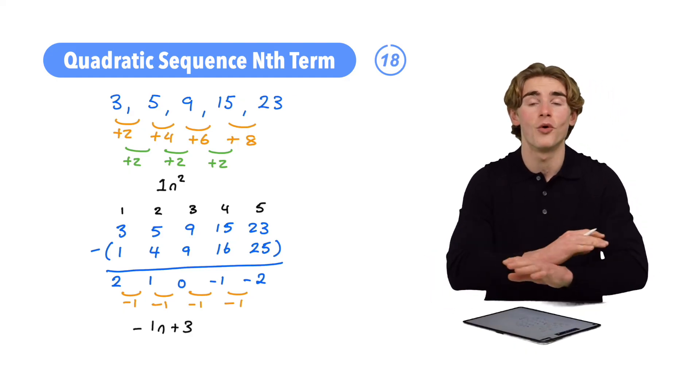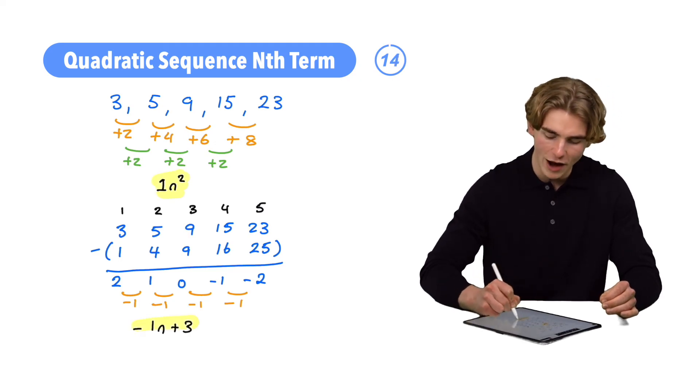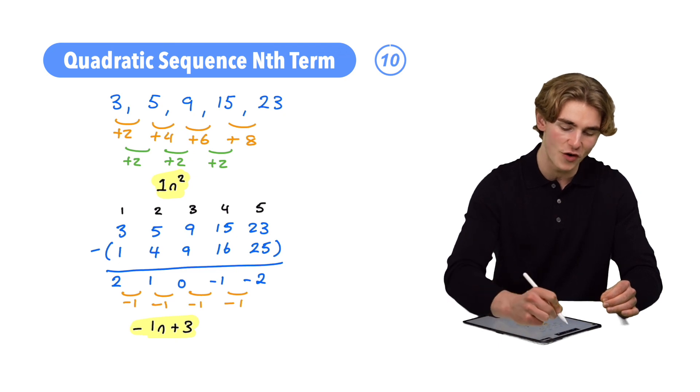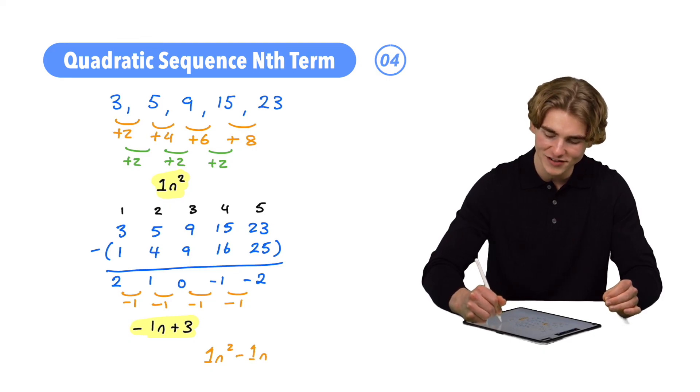So that is going to give us the last part of our nth term, guys. So now we can combine all of our components. We can combine our 1n squared with our minus 1n plus 3. And we're going to get, guys, our final answer for our quadratic nth term as 1n squared minus 1n plus 3.